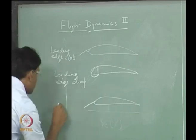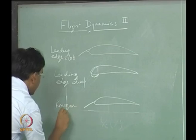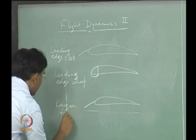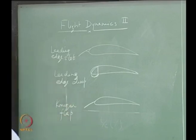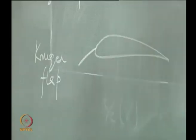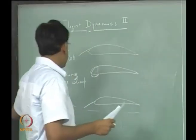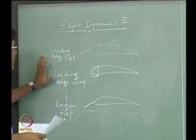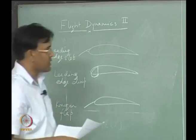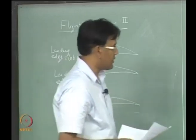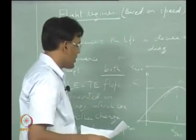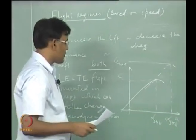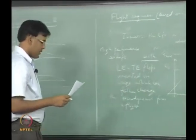This type of leading edge device is called a Kruger flap. These devices are used on high-performance aircraft nowadays to change the lift profile in flight.